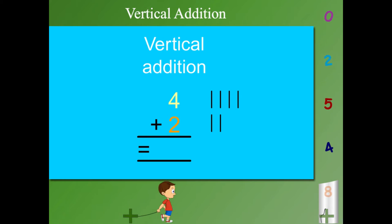Count from one end. 1, 2, 3, 4, 5 and 6. So 4 plus 2 is equal to 6.